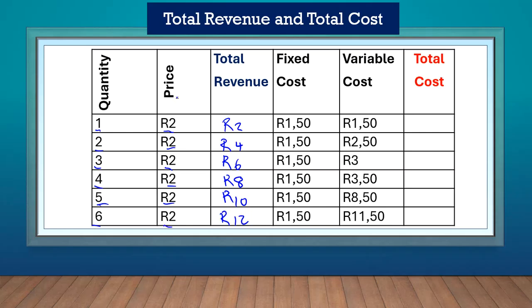You'll notice when you look at the price column that the price is always two rands. This is because no firm can change a price in a perfect market. All firms are price takers. So if the price is two rands, it will always be two rands.